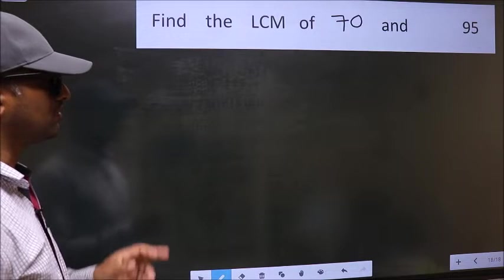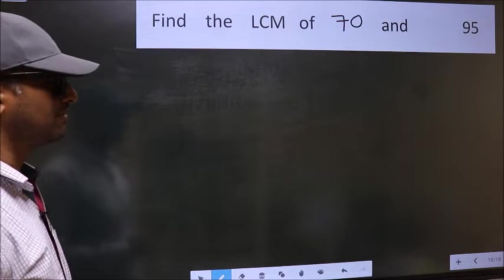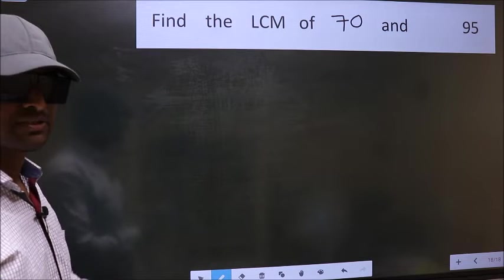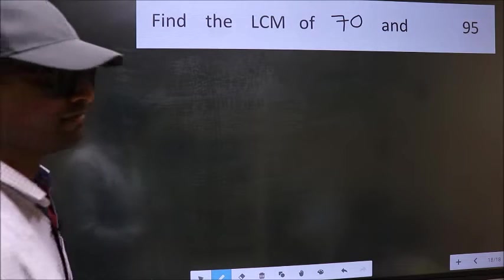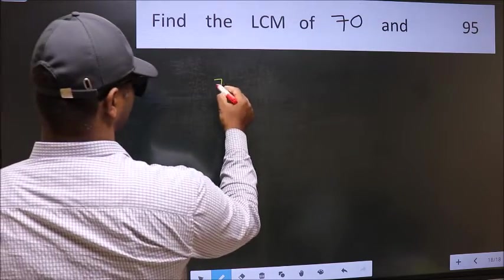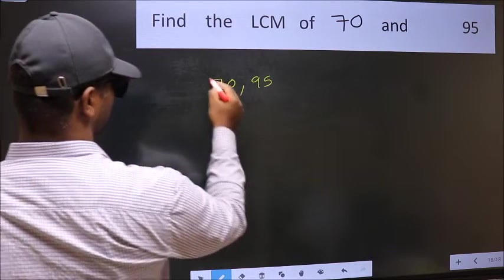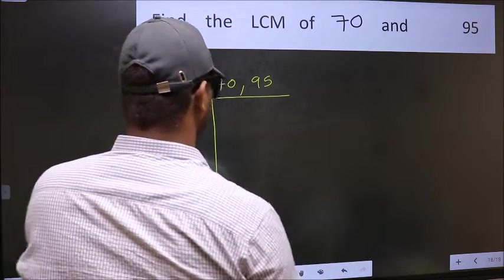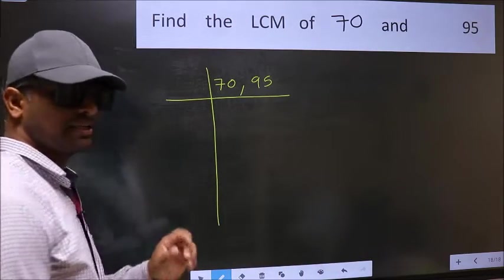Find the LCM of 70 and 95. To find the LCM, we should frame it in this way. Write 70, 95. This is your step 1.